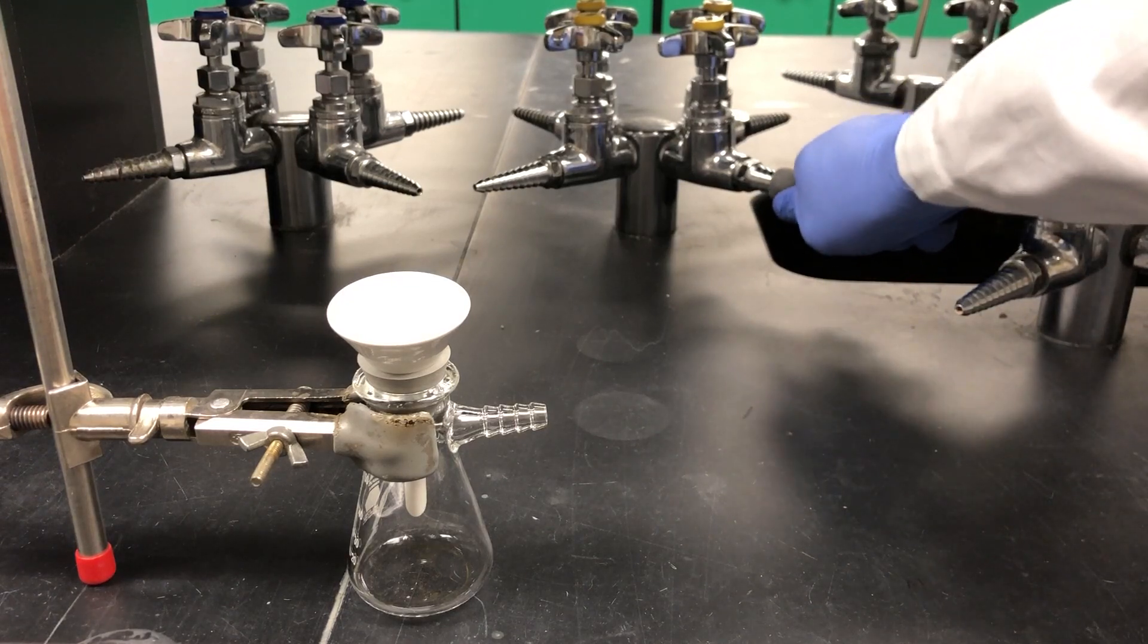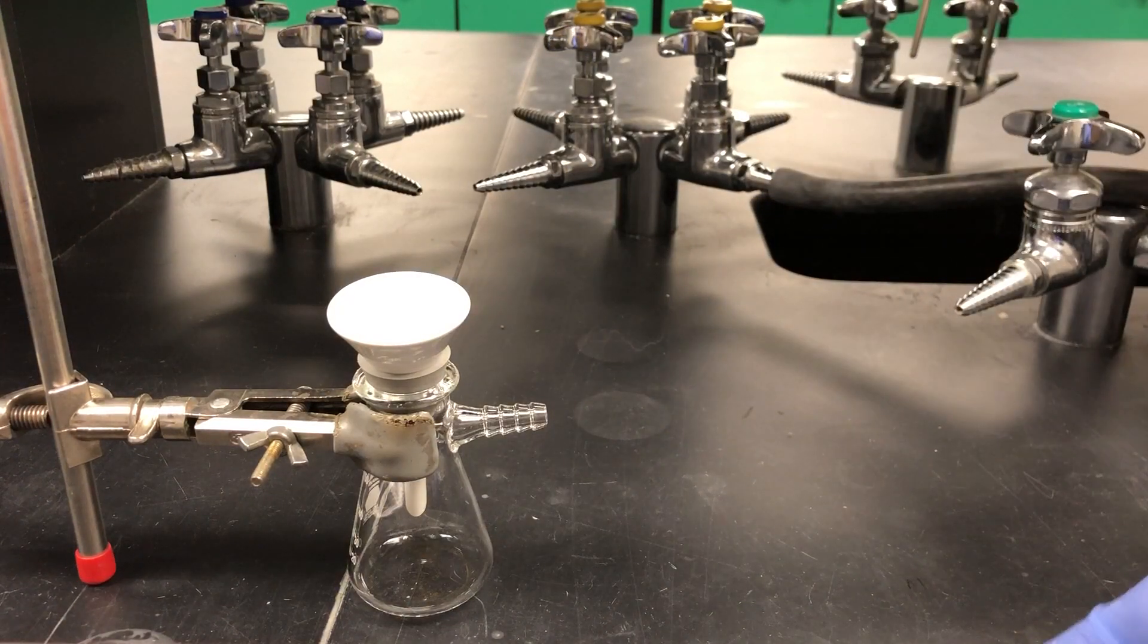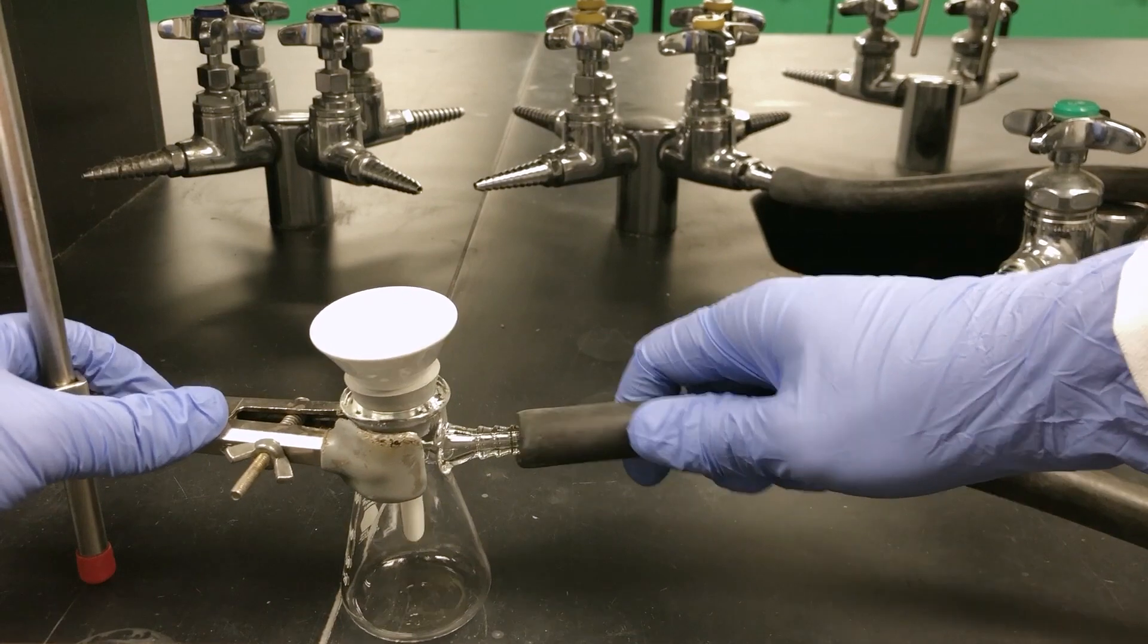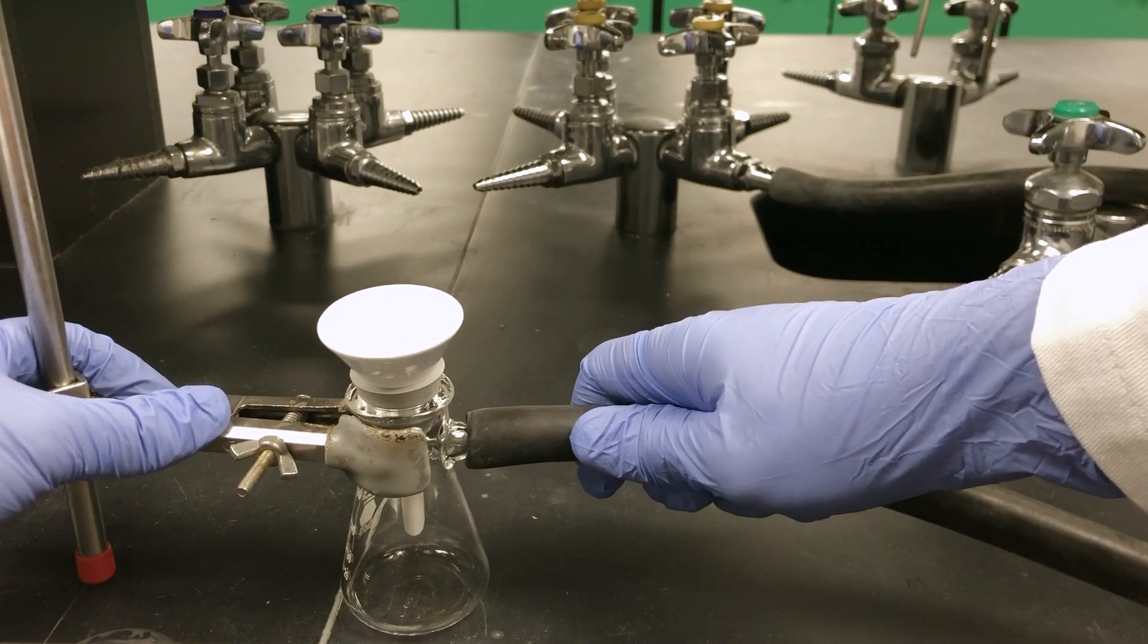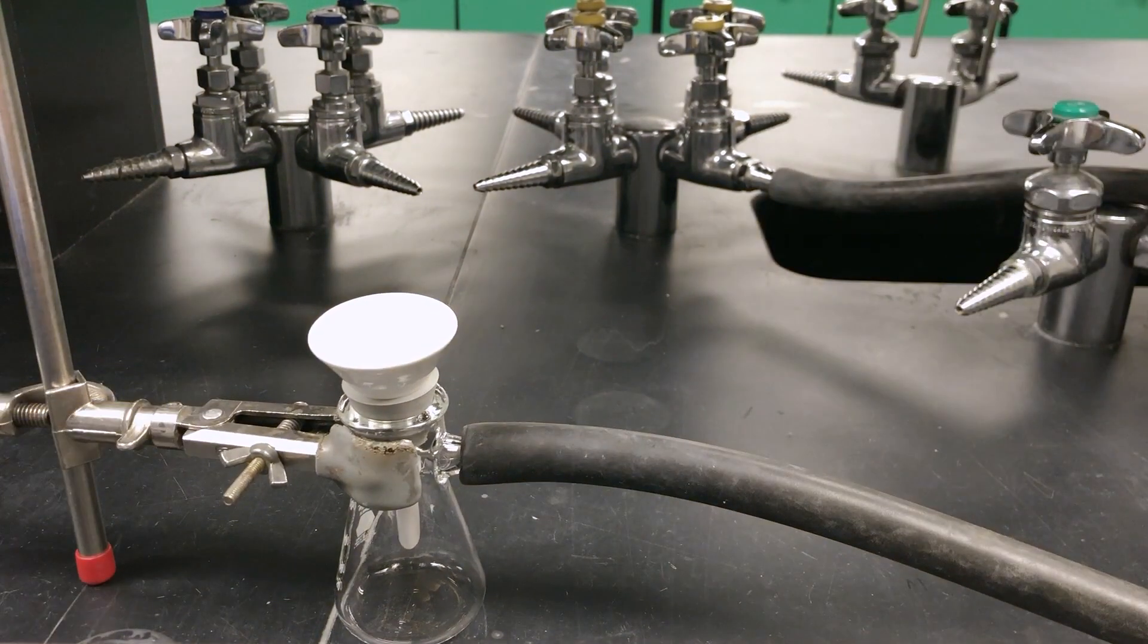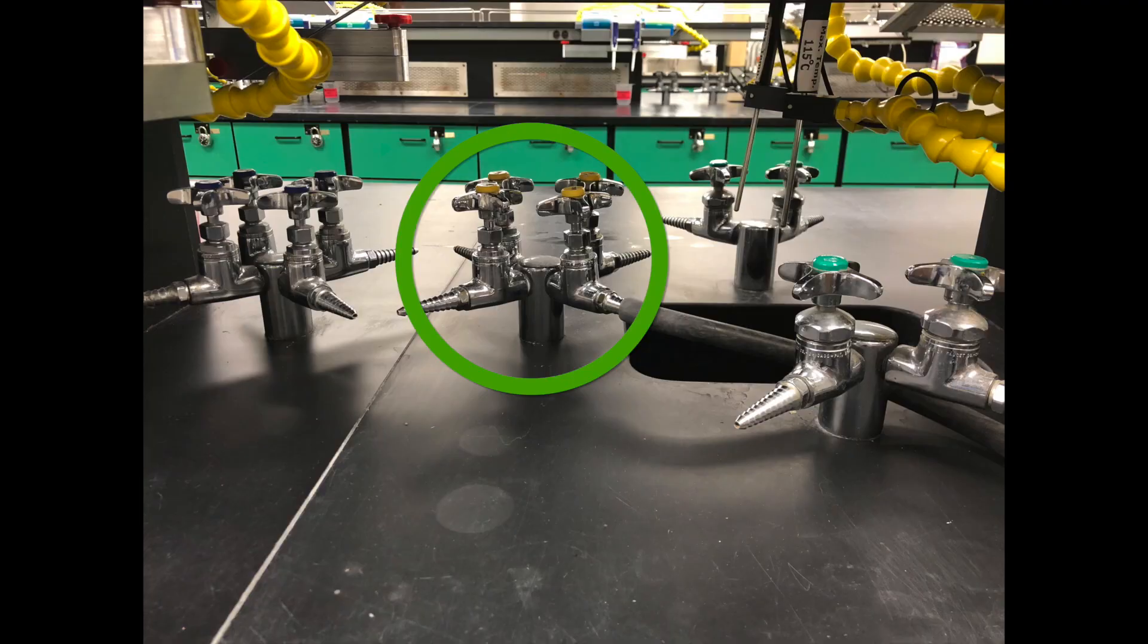Next, take your vacuum tubing and attach one end to the yellow vacuum tap, and the other end to the stem of the filter flask. Be sure to attach the tubing to the correct tap, as you do not want to attach it to the water or the gas lines.